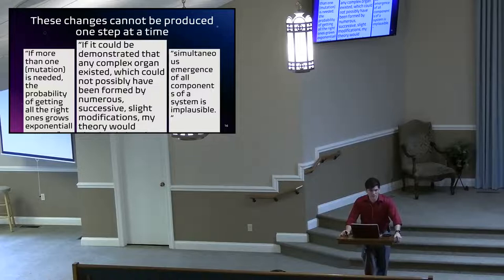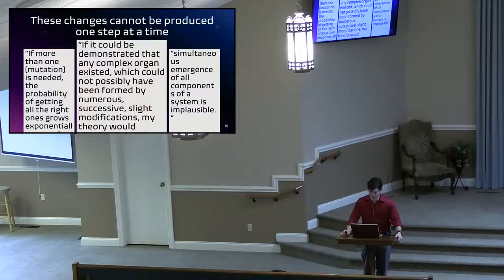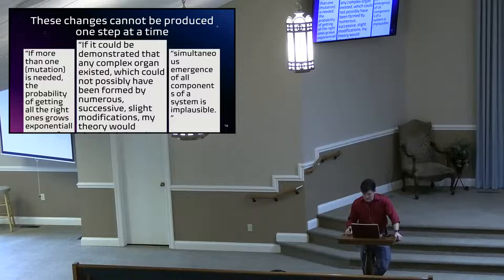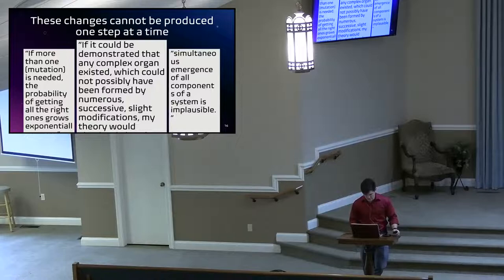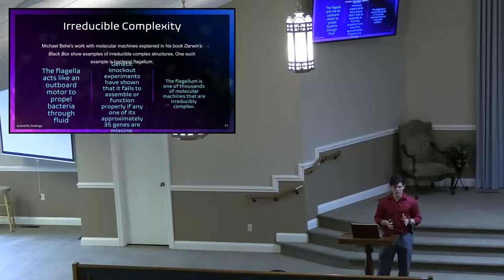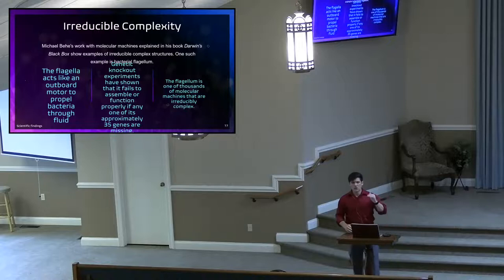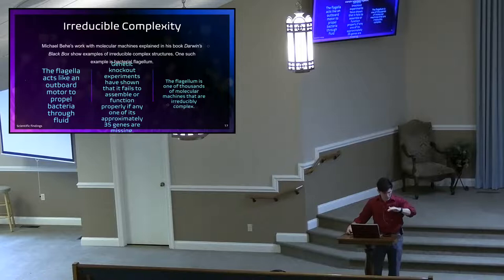If any one organ existed where it was irreducibly complex — multiple things had to happen simultaneously — then everything Darwin was saying breaks down. The Journal of the Proceedings of the U.S. National Academy of Science says: 'Simultaneous emergence of all components of a system is implausible.' So kind of supporting what Darwin himself said can't happen. Michael Behe coined the term 'irreducible complexity,' meaning that you cannot get any less complex than this — at its state right now, you cannot break it down anymore.